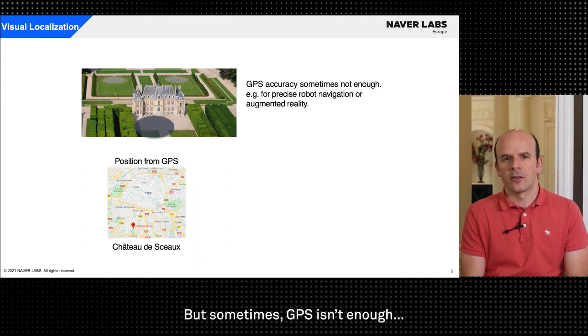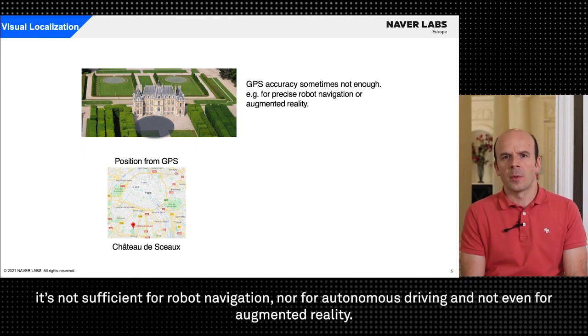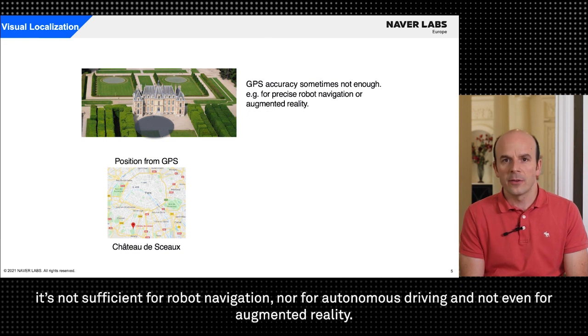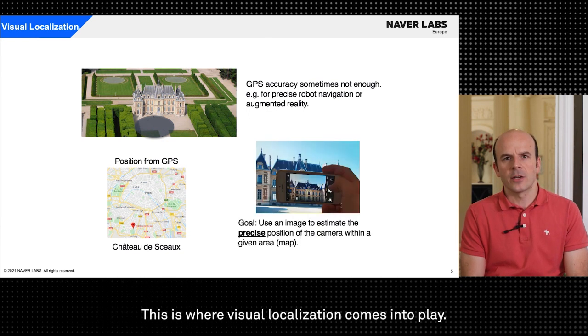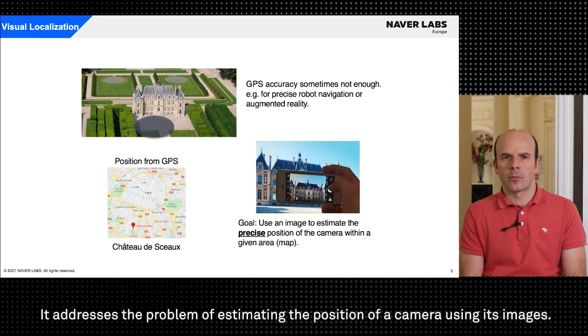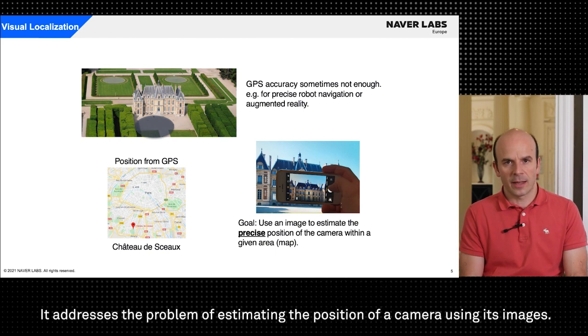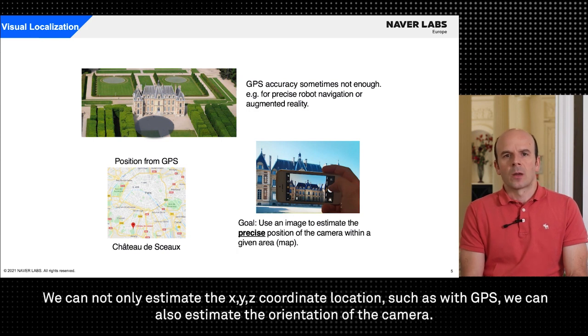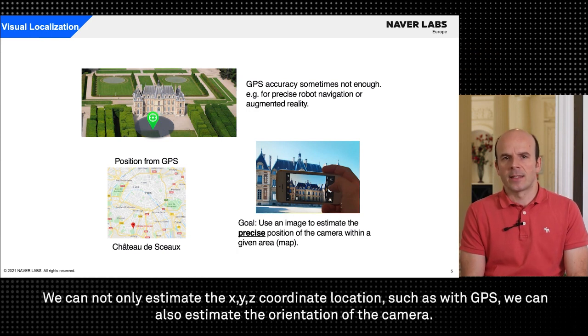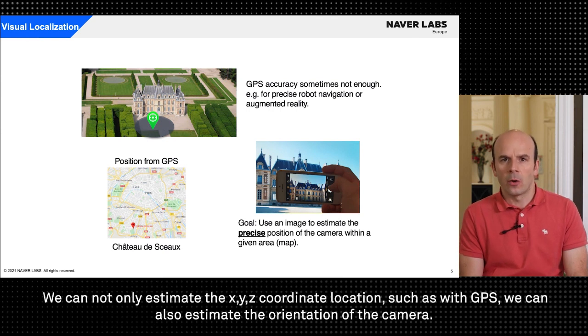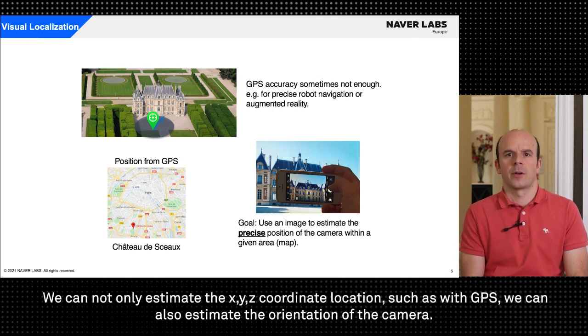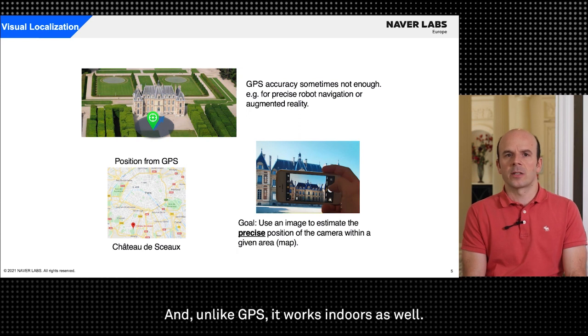But sometimes GPS isn't enough. It's not sufficient for robot navigation nor for autonomous driving and not even for augmented reality. This is where visual localization comes into play. It addresses the problem of estimating the position of a camera using its images. We can not only estimate the xyz coordinate location such as with GPS, we can also estimate the orientation of the camera and unlike GPS it works indoors as well.